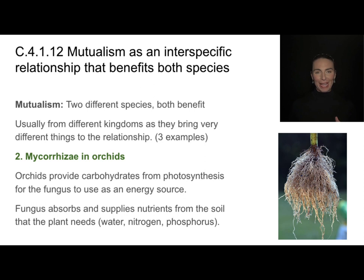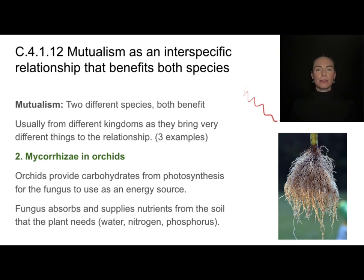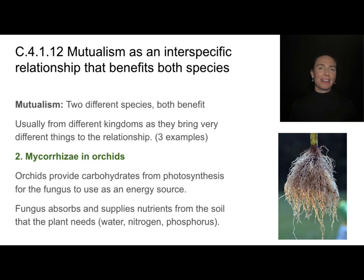Another mutualistic relationship involving plant roots is between mycorrhizae — a fungus — and orchids. The orchids provide carbohydrates from photosynthesis, stored in their roots, which the fungus feeds on. In turn, the fungus absorbs and supplies nutrients from the soil that the plant needs, providing a much greater surface area for absorption. Both organisms benefit from this arrangement.